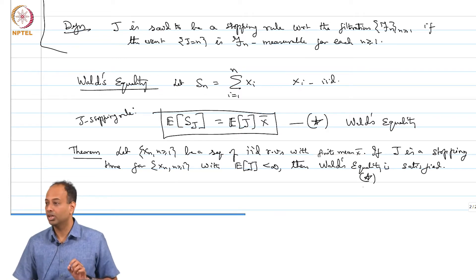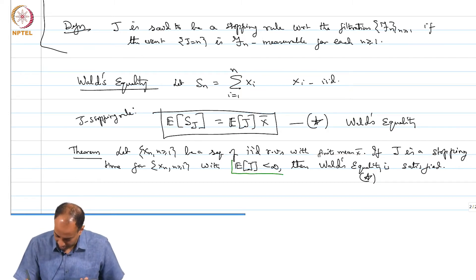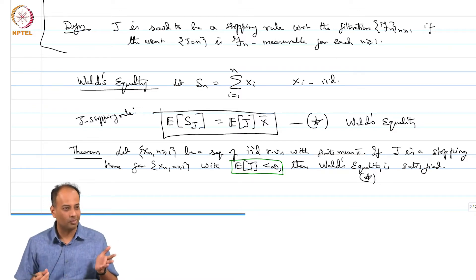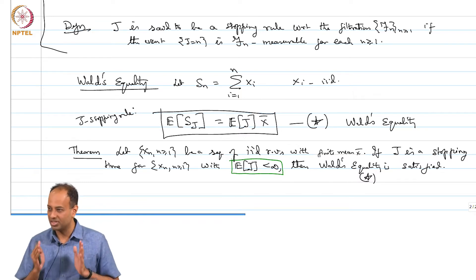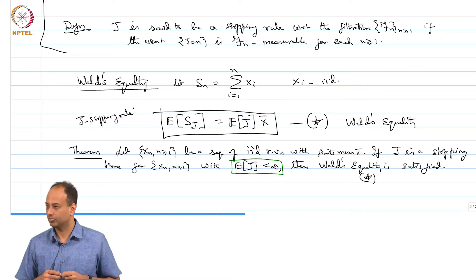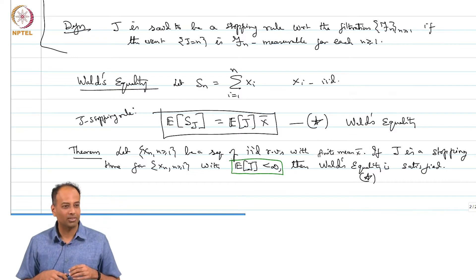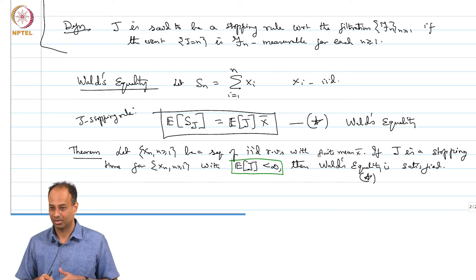The key conditions are: j should be a stopping rule for x_n, and — very importantly — E[j] should be finite. Not only must you stop with probability 1 (otherwise it is a defective stopping rule), but in addition to being a legitimate stopping rule, you need E[j] to be finite. If E[j] is infinite, Wald's equality may not hold. A random variable can be finite with probability 1 and still have infinite expectation — that is not allowed here.